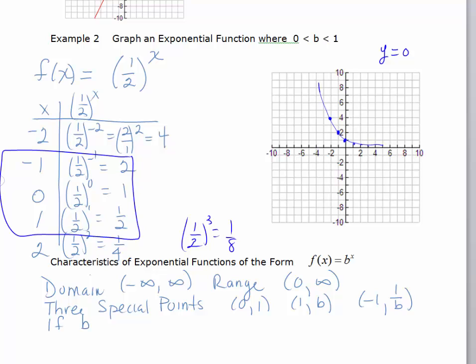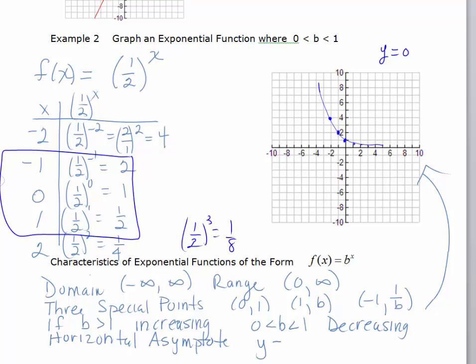Basically, if b is greater than 1, your function is going to be increasing, as in the case of f(x) equals 2 to the x. If b is between 0 and 1, your function is going to be decreasing, like this one right here. You have, for both of these, you have a horizontal asymptote of y equals 0.